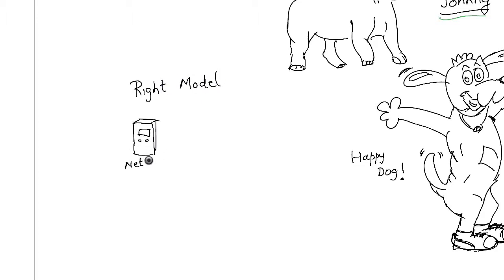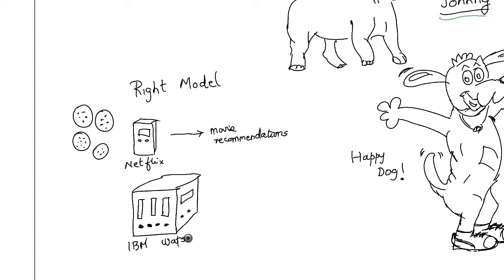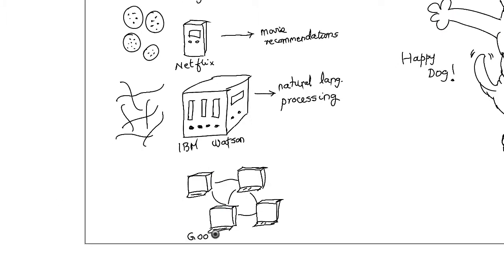While Netflix's computers create a model to make movie recommendations, IBM's Watson may create a model for natural language processing and Google's computers create models for face recognition and photographs.